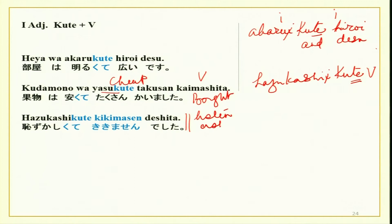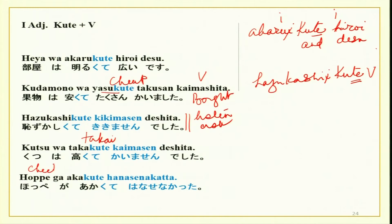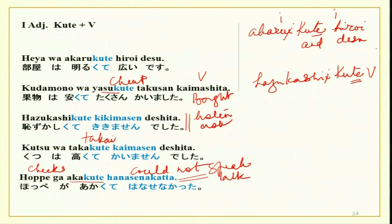Kutsu wa takakute kaimasen deshita — the shoes were very expensive, I did not buy. Takai becomes takakute. Hoppe ga akakute hanasenakatta — my cheeks were red and I could not speak. You have done the potential form in lesson 17: hanasenakatta means I could not talk. So kute with verbs is now very clear and you will be able to make sentences on your own.